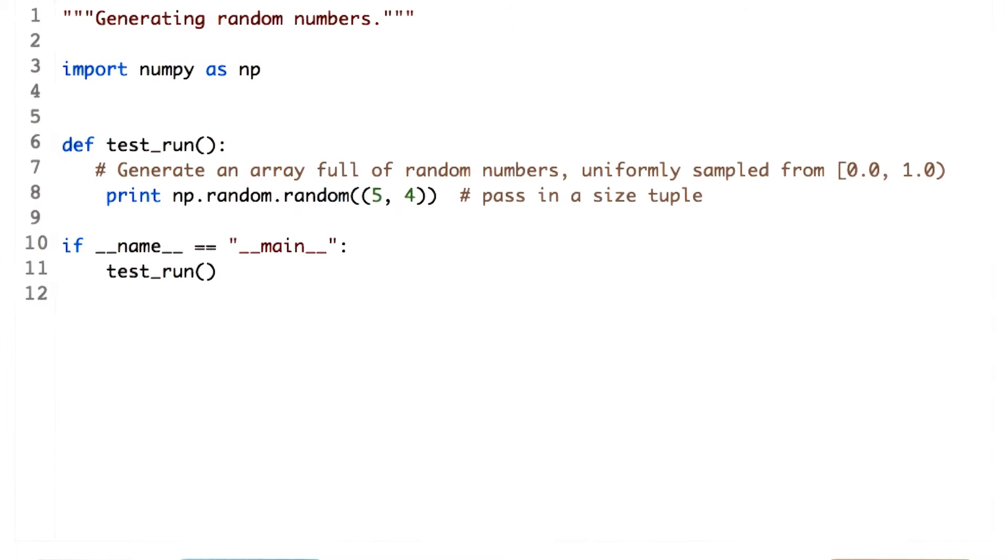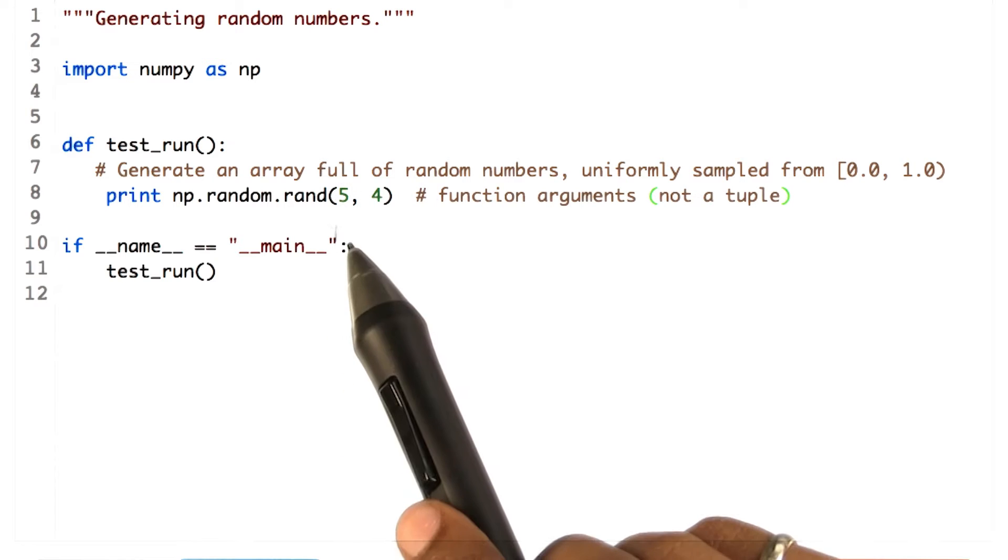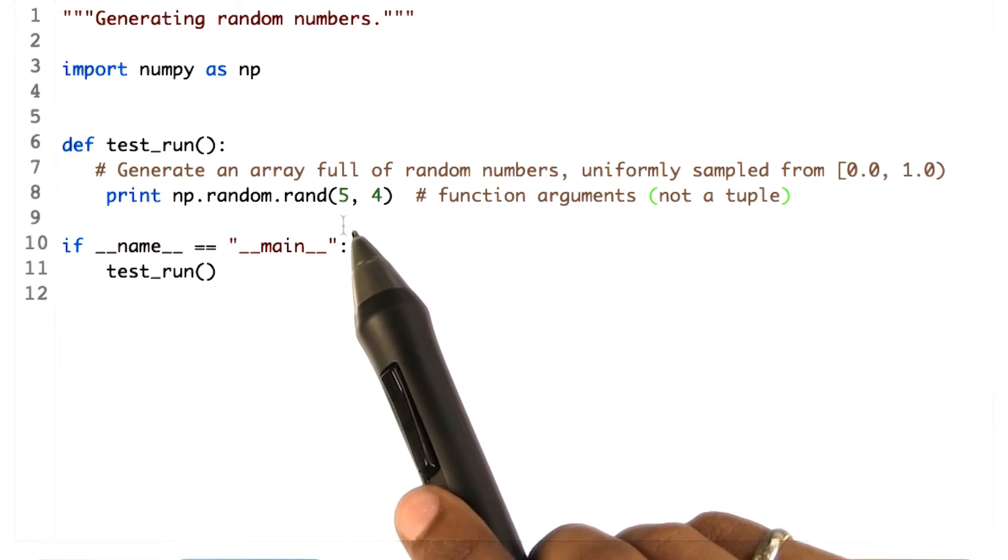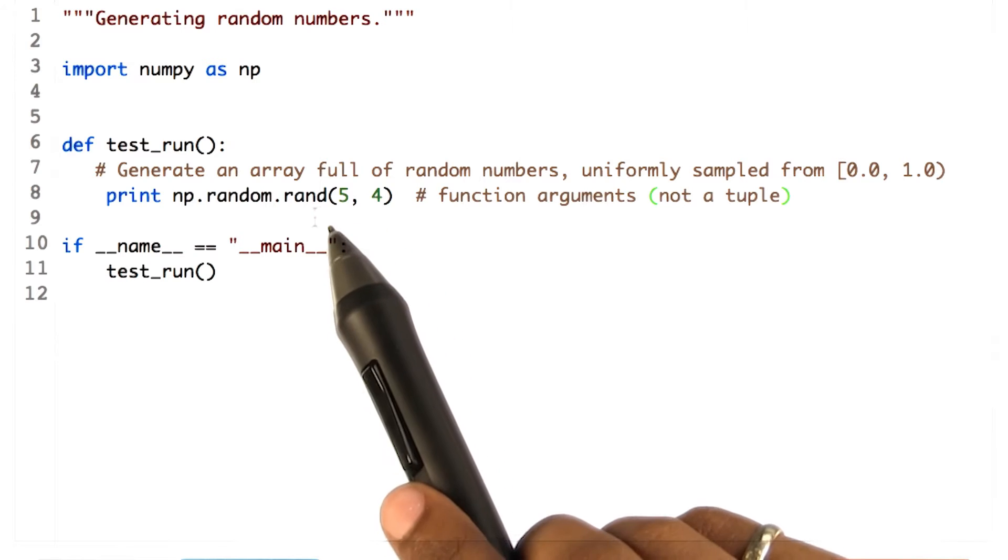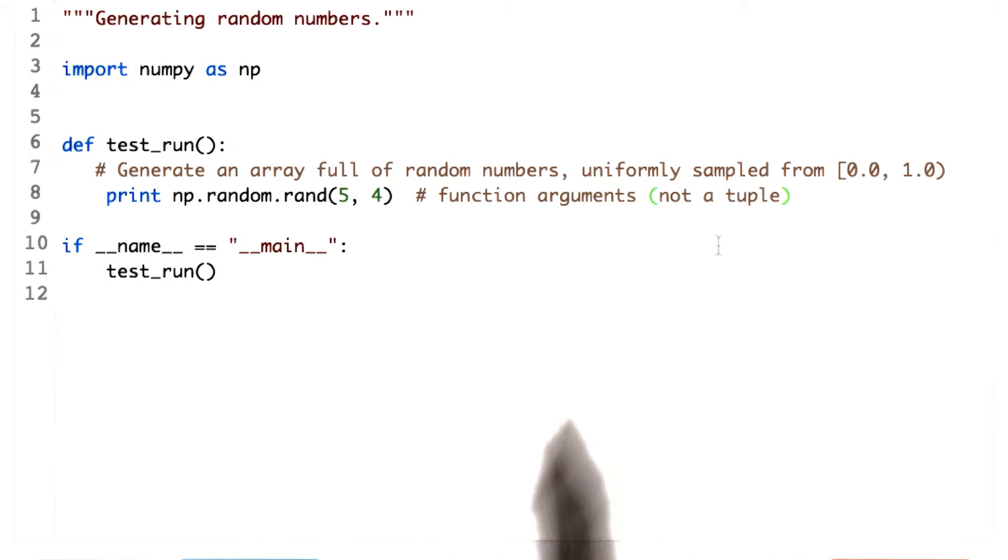A slight variant of this function is rand, which directly accepts a sequence of numbers as arguments instead of a tuple. It is otherwise equivalent. Observe that we directly passed the values of the rows and columns to the function and did not define a tuple.